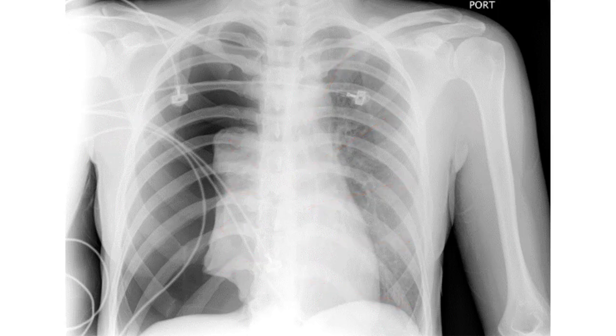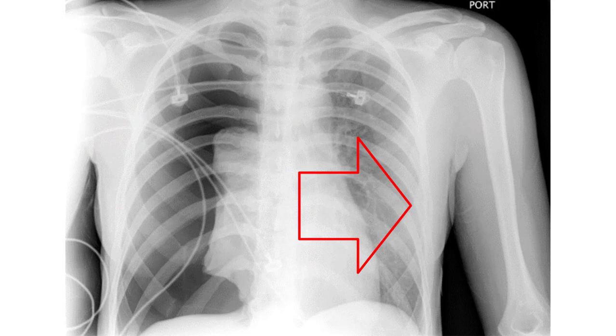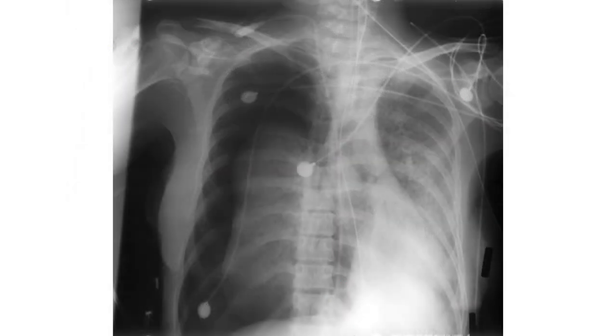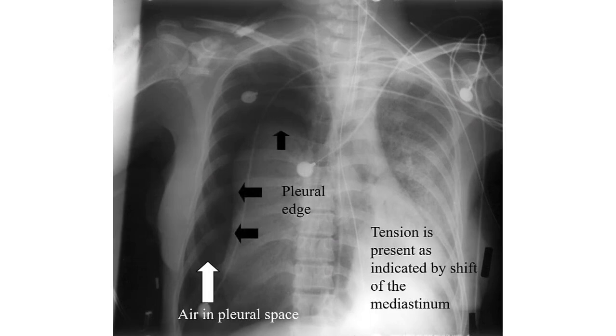In the setting of tension pneumothorax, the chest x-ray will show evidence of increased pressure within the pleural space. While mediastinal deviation is the most obvious finding in these cases, more subtle findings may include flattening of the hemidiaphragm and increased rib spacing on the affected side. Here is the chest x-ray of a second patient with tension pneumothorax. Note how dramatic the mediastinal shift is in this film.